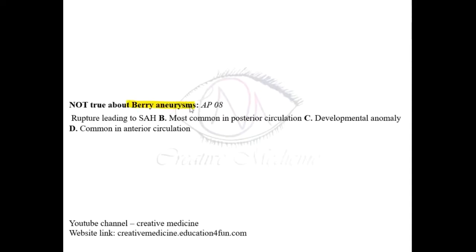Which statement is not true regarding berry aneurysm? In berry aneurysm, there is rupture leading to subarachnoid hemorrhage. It is not common in posterior circulation — actually it is common in anterior circulation. A developmental anomaly is seen and is common in anterior circulation. So this is the false statement.